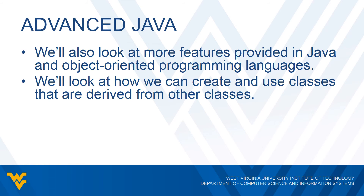Specifically, we'll see how we can create classes that are derived from other classes. In CS 121 we created a class, and if we needed other functionality we'd create a second class and use objects of those classes. Here we're going to see that we can take a class and then create a new class based on that original class.